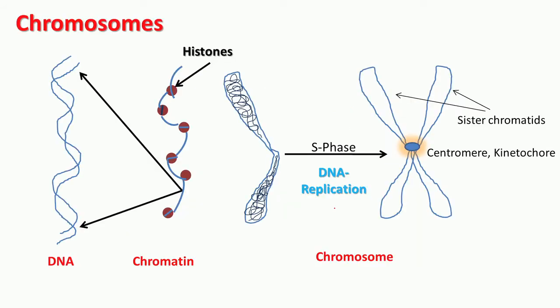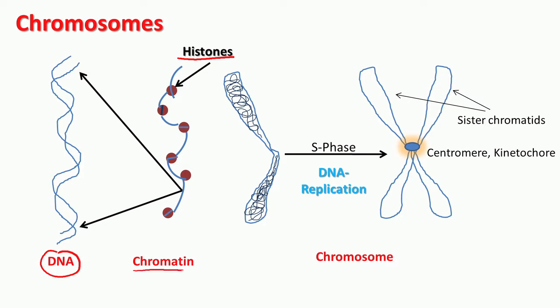Let us come back to mitosis. Before I get into the actual process, it is very important to understand how our chromosomes are arranged. Our genetic material is encoded in DNA, but a single stretched DNA strand is way too long, so it gets packaged through multiple foldings and wrappings around a set of proteins called histones. The DNA wraps around these histones to form what is called chromatin. Each chromatin further twists and folds to form a very compact structure — that is what you call a chromosome.